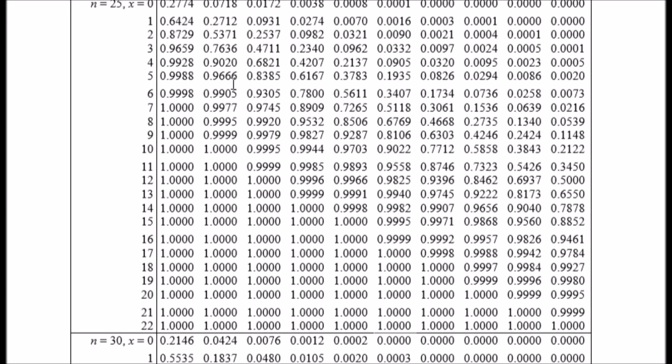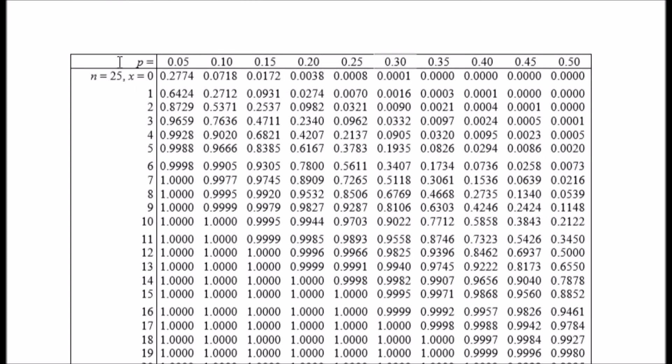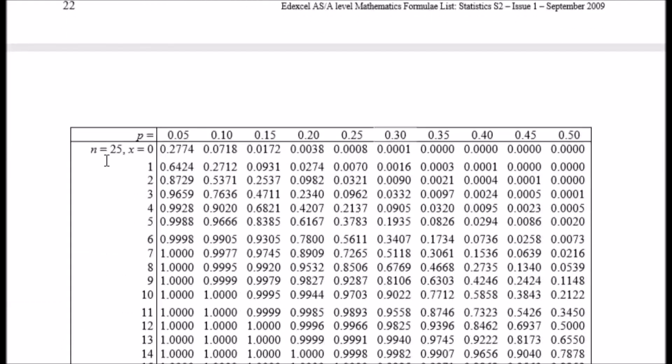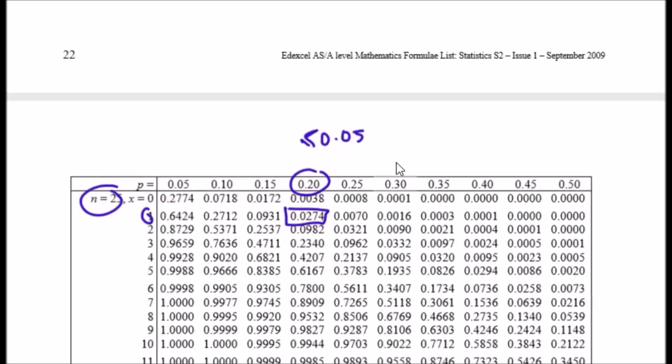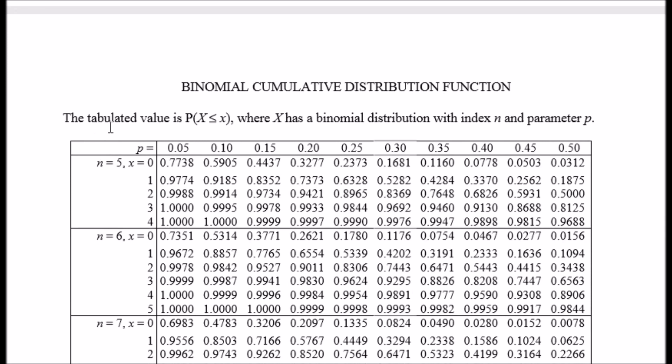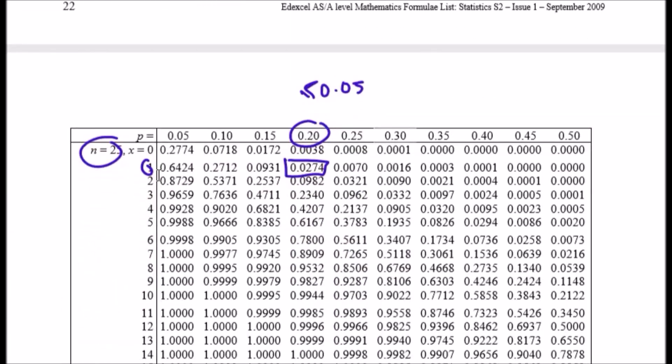Looking at n equals 25 and p equals 0.20, we scan down this column up to 5%. It needs to be no less than 0.05, so this would be the tightest one. This represents x is 1. The tabular value is the probability that the random variable x is less than or equal to the point x. So at this point it will be x greater than or equal to 1, which equals 0.0274.